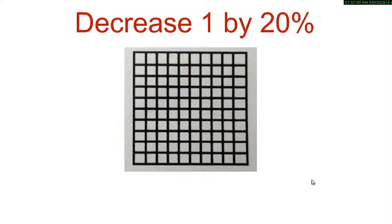Let us now try to decrease 1 by 20%. So, shade 1 whole 10 by 10 grid using any one color and remove 20 squares using any other color to represent 20%. Count the number of squares you are left with.